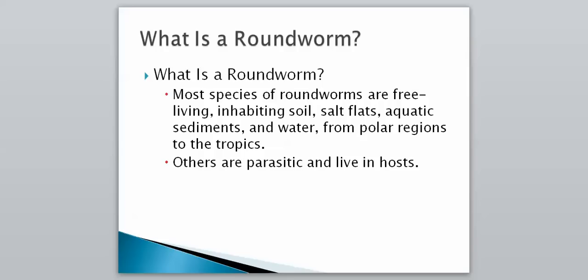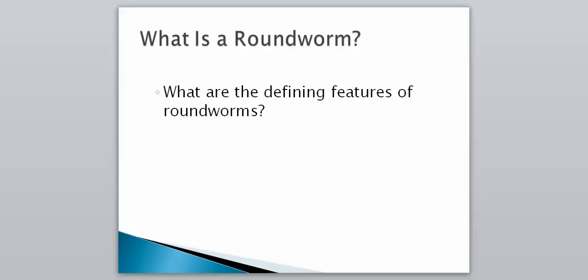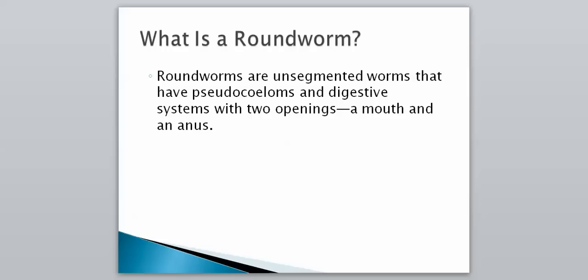We're going to take a look in the next video at those parasitic worms as well. Now let's look at what are the defining features of this group — what makes them so different than the other types of worms. Roundworms are unsegmented worms that have pseudocoeloms and digestive systems with two openings: a mouth and an anus.